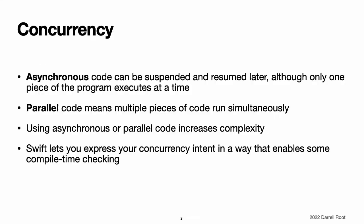Concurrency. Swift has built-in support for writing asynchronous and parallel code in a structured way. Asynchronous code can be suspended and resumed later, although only one piece of the program executes at a time. Suspending and resuming code in your program lets it continue to make progress on short-term operations like updating its UI while continuing to work on long-running operations like fetching data over the network or parsing files.